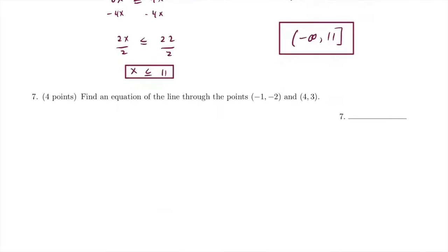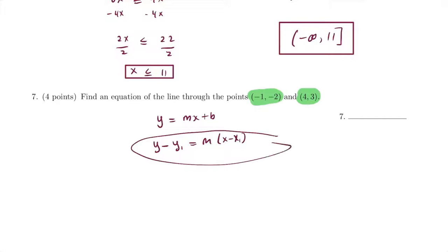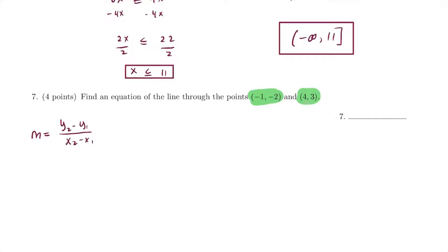Here's the next problem — we want to find the equation of a line through the points (−1, 2) and (4, 3). First find the slope. Label (−1, 2) as (x₁, y₁) and (4, 3) as (x₂, y₂). The slope is (3 − (−2)) / (4 − (−1)) = 5 over 5 = 1. So m equals 1.